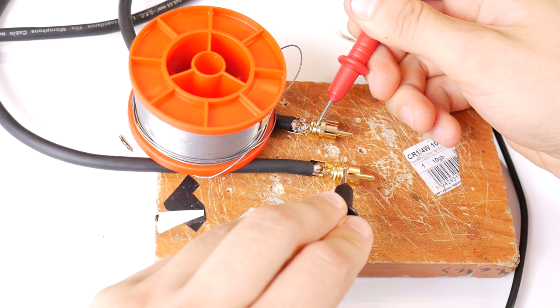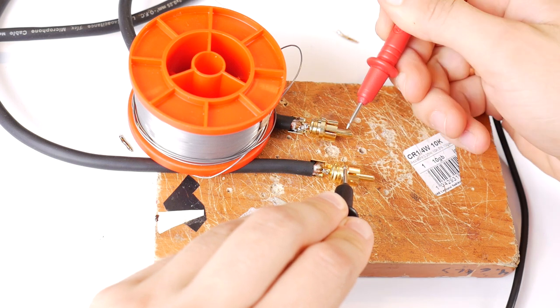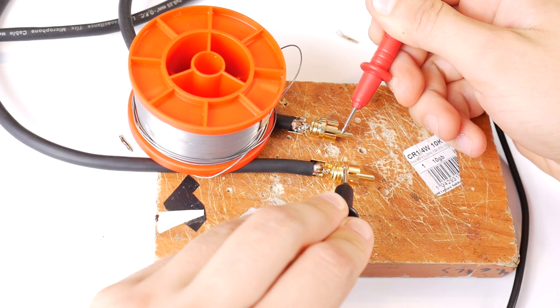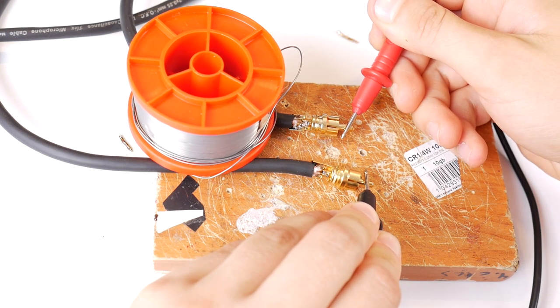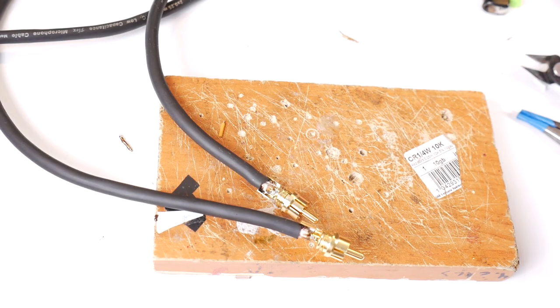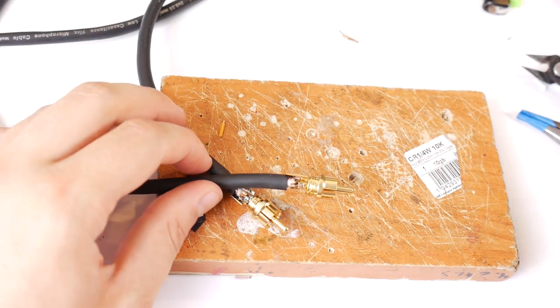Once both RCA jacks are soldered, check with a multimeter that there is no short circuit and that the wires are soldered correctly, ground to ground and signal to signal pin. If you don't know how to use a multimeter, check out Tech Screw School video on how to use a multimeter.